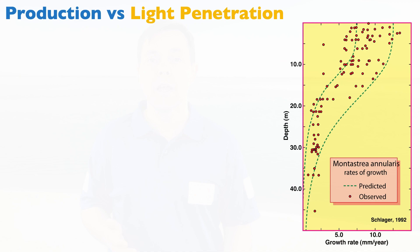And to bring this point home, I'm showing you some actual data from the Bahamas, looking at one type of coral, Montastreia annularis. What we have here is predicted growth of this particular coral in green dashed lines, so that's the theoretical model. And then we have observed growth rates. The growth rates are on the horizontal axis in millimeters per year, and the vertical axis is depth below sea surface.